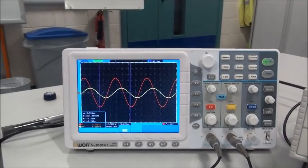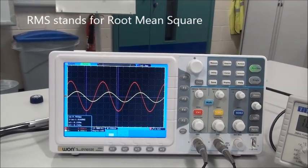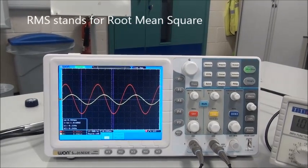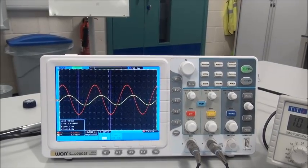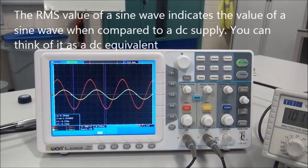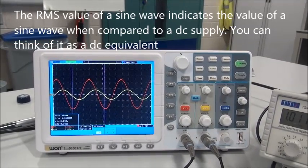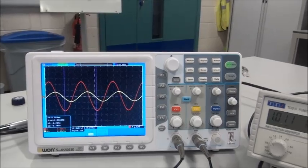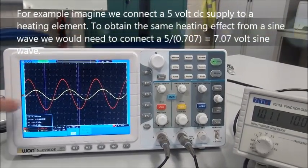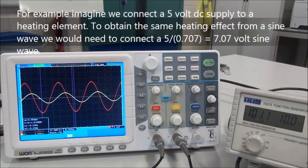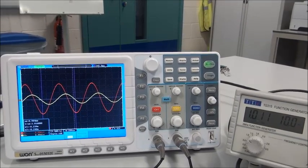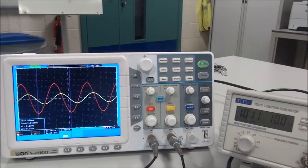The RMS value of a sine wave is an indication of its heating effect when compared with a DC supply. To calculate the RMS of a sine wave, it's very simple. We simply measure the amplitude, which was 4.88 volts in this case, and then multiply that by 0.707.